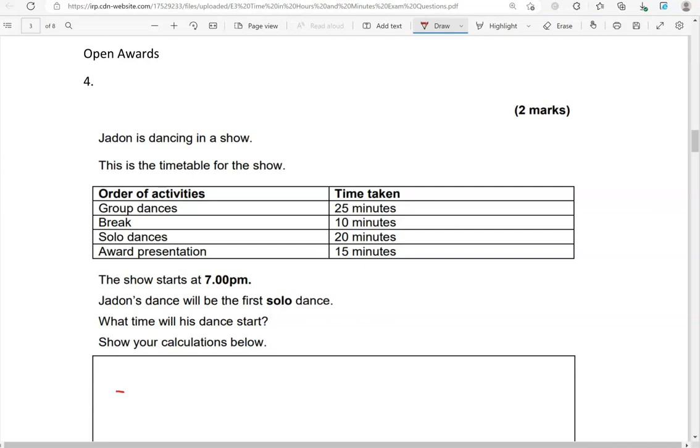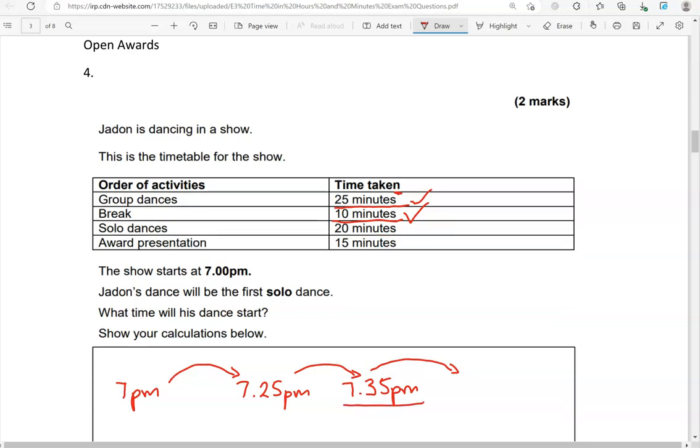So the show starts at 7 PM, that's the starting point. Then we have the group dances which take 25 minutes, so we're going to 7:25 PM. And then we have a break for 10 minutes, so we're going to 7:35 PM, adding 10 to 25. Then we have the solo dances. Jaden's is the first one, so that will be at 7:35 PM.